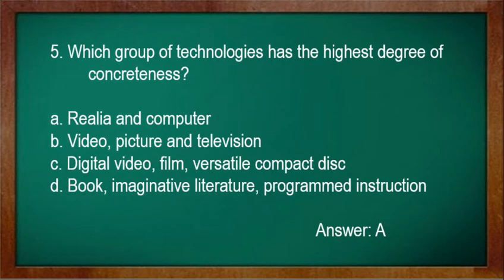Number 5: Which group of technologies has the highest degree of concreteness? A. Realia and computer. B. Video, picture, and television. C. Digital video, film, versatile compact disc. D. Book, imaginative literature, programmed instruction. Answer: A.